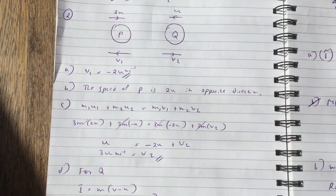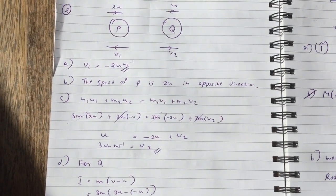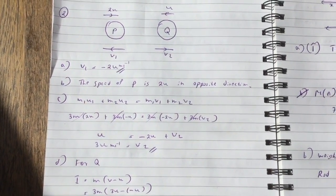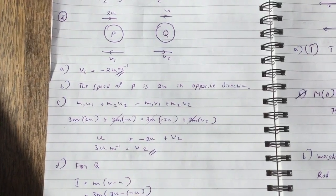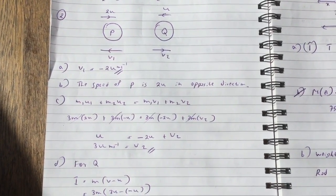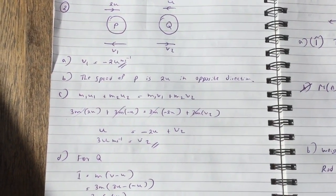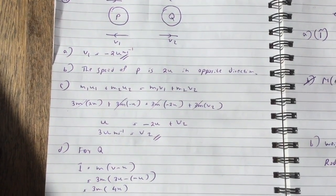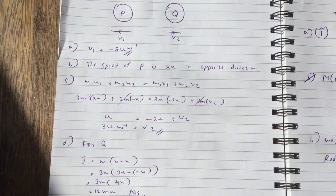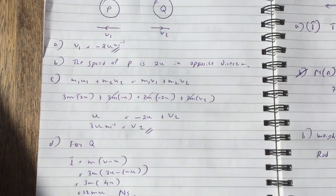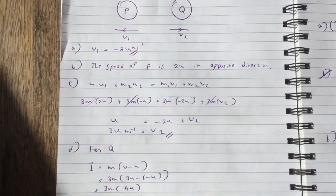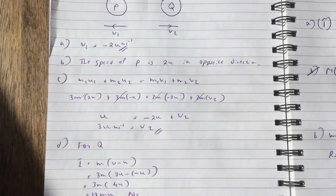So I've written for part C, I've written the momentum equation, which is M1u1 plus M2u2 equals M1v1 plus M2v2. And when you substitute the values, you get v2 equals 3u meters per second. You can clearly see how I worked it out.